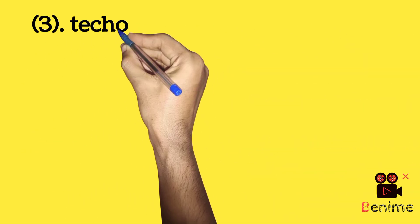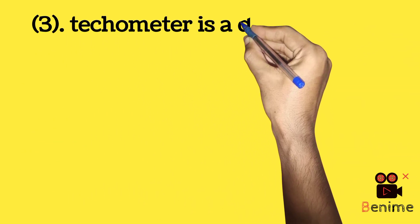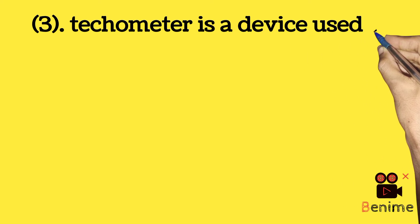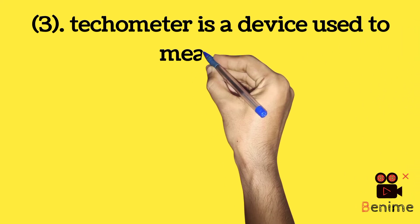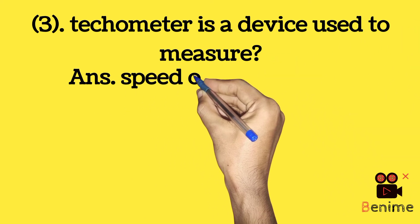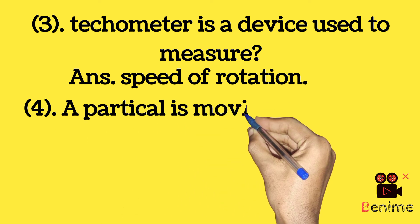Third question: a tachometer is a device used to measure — answer: speed of rotation.